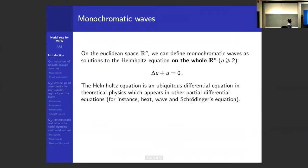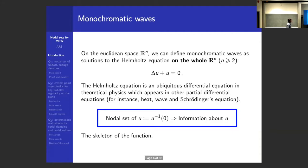First of all, we start with a definition. What are monochromatic waves? For us, monochromatic waves are solutions to the Helmholtz equation with a fixed eigenvalue, and they are solutions on the whole Euclidean space. The Helmholtz equation is a very important equation in theoretical physics — it appears in thermodynamics, electromagnetic theory, and quantum mechanics. In order to obtain information about the function, what we can do is to try to understand the nodal set, because the nodal set, the zero level set, is like the skeleton of the function.